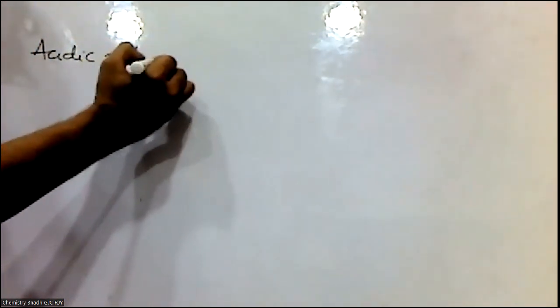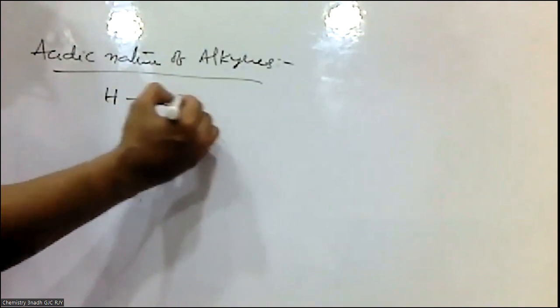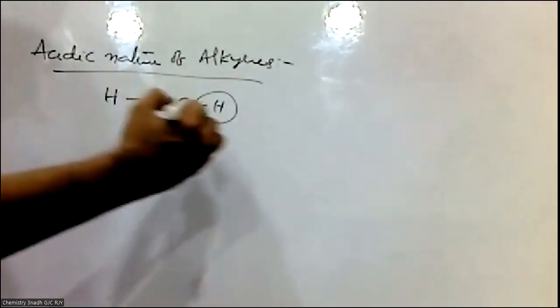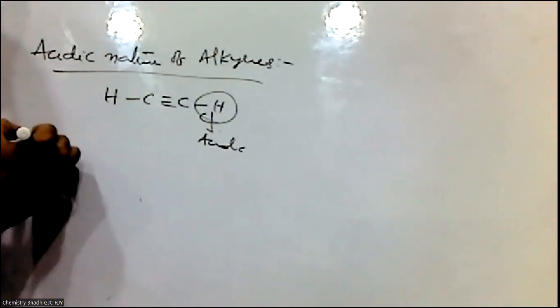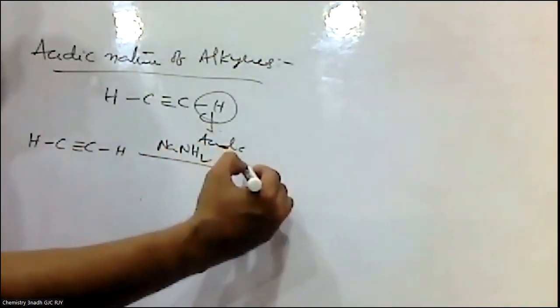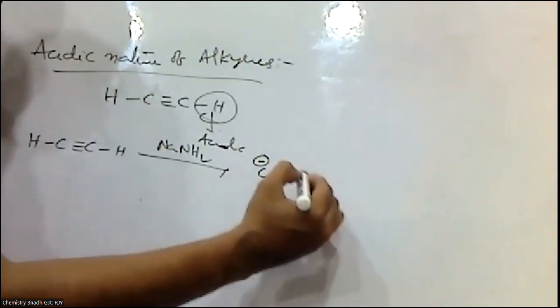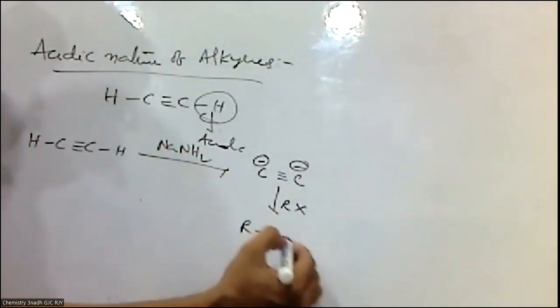Higher alkynes are prepared from terminal alkynes. When H-C≡C-H reacts with sodamide, it forms the corresponding acetylide (sodium acetylide), which then reacts with an alkyl halide to give R-C≡C- (higher alkyne).